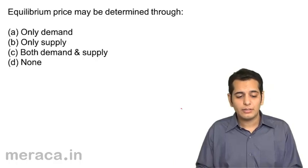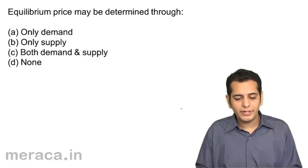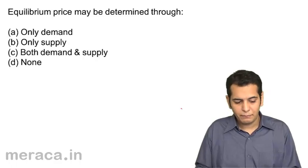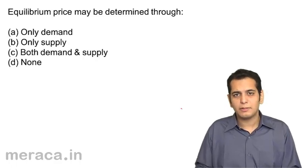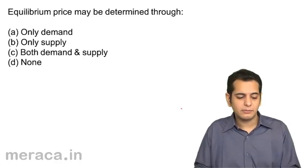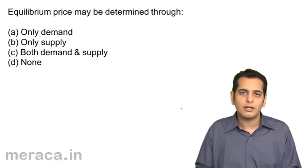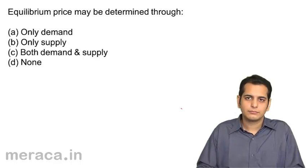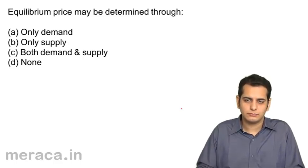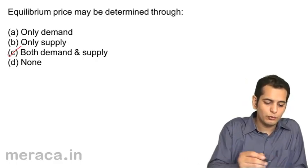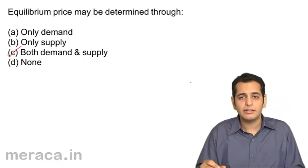The first question: equilibrium price may be determined through — a) only demand, b) only supply, c) both demand and supply, d) none. Yes, the answer is both demand and supply.